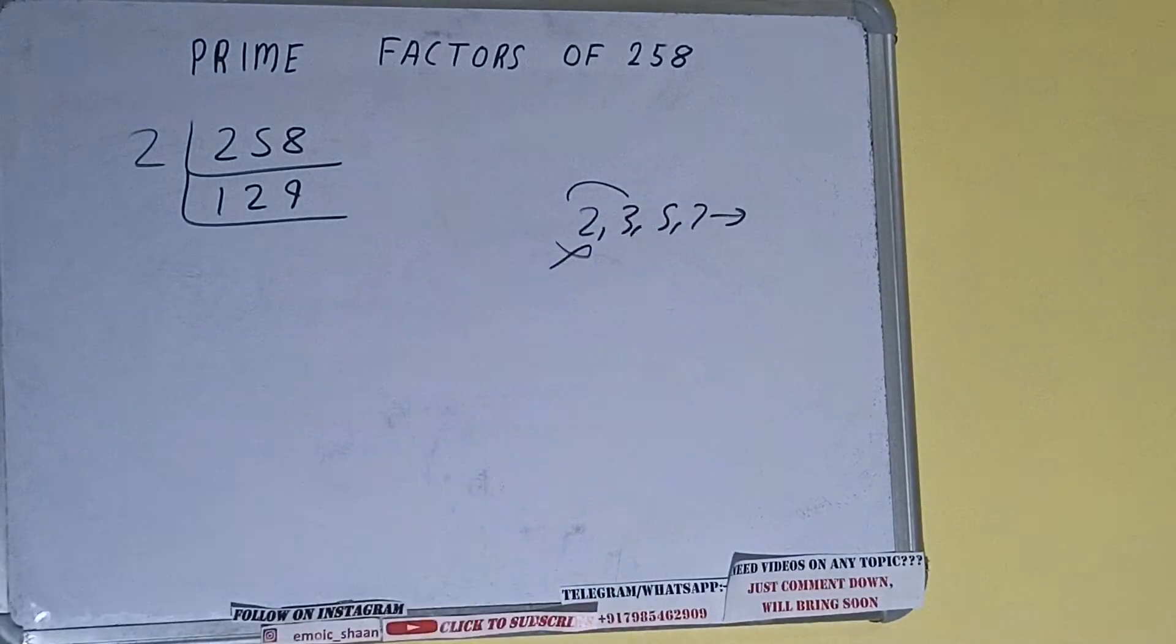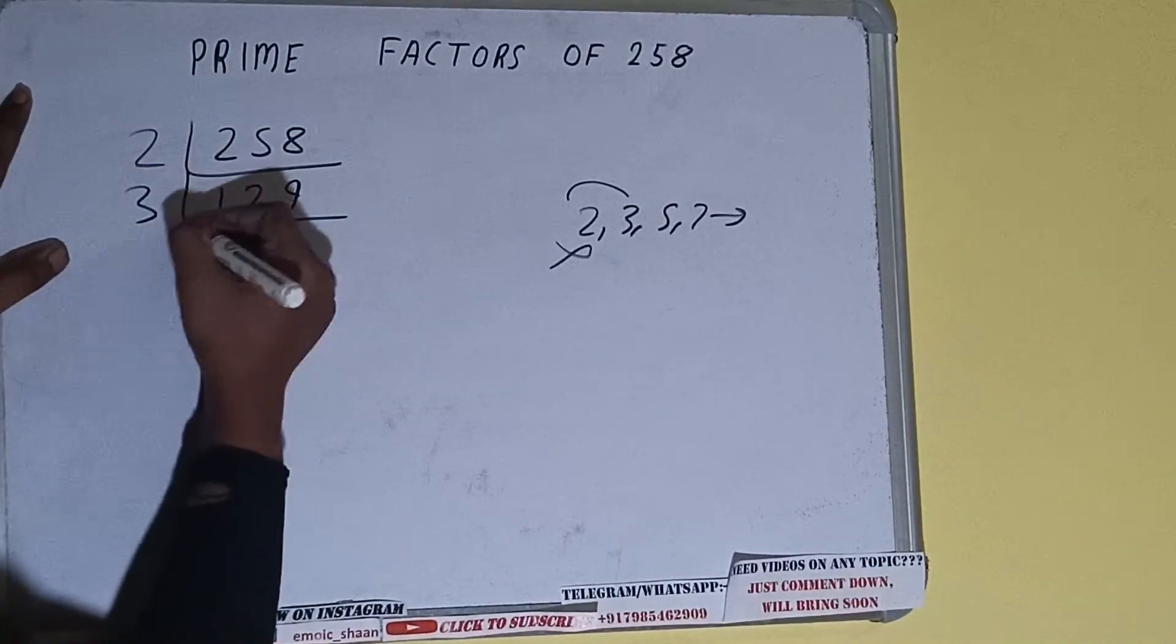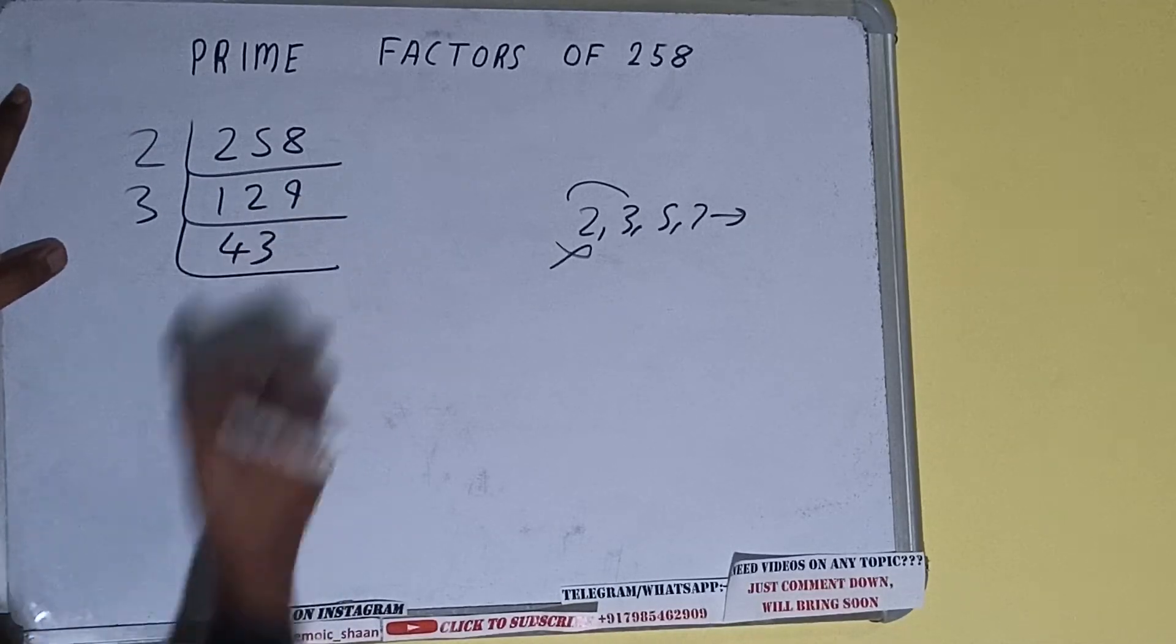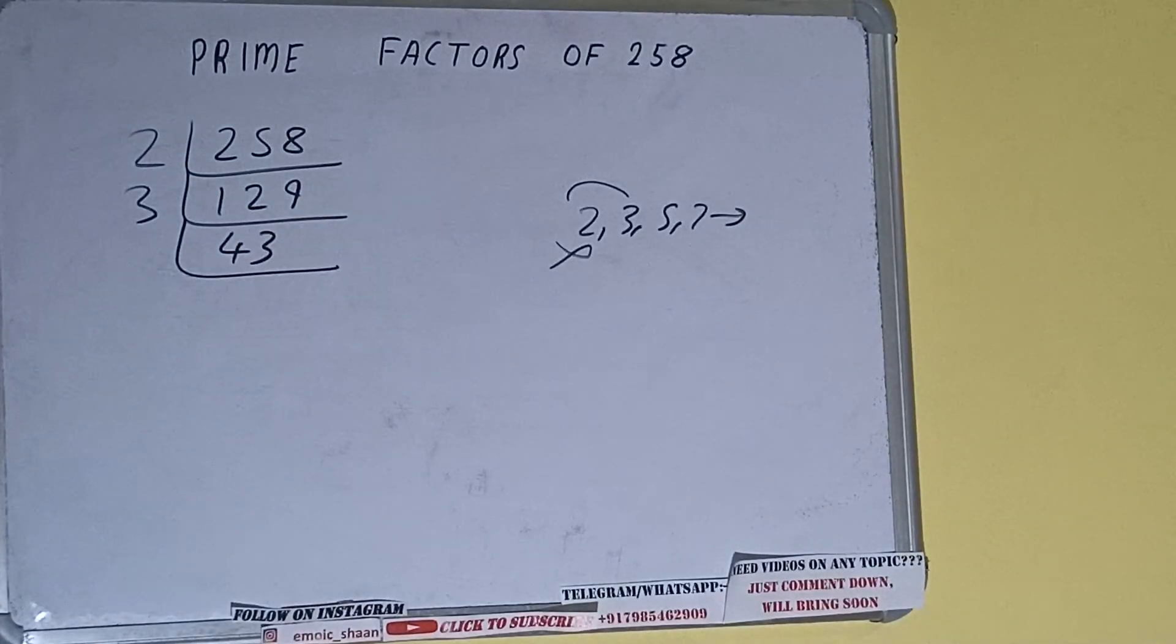So we'll check with the next lowest prime number, that is 3. 3 times 4 is 12, 3 times 3 is 9. It is divisible by 3, and we'll be having 43. 43 is further not divisible by 3.